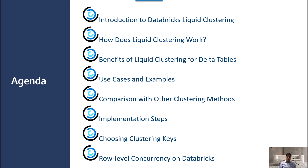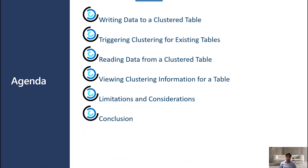Then we'll cover how to implement this brand new feature in Delta tables, how to choose the clustering keys, and what is row-level concurrency on Databricks and how Liquid Clustering helps achieve that. Then we will understand how to write data to clustered tables and trigger clustering for existing tables, then reading and viewing clustering information, and finally the limitations of Liquid Clustering and the conclusion.